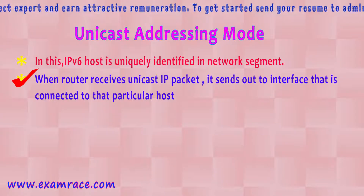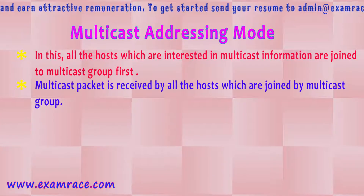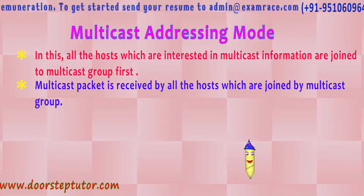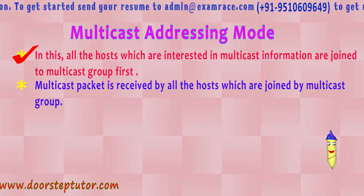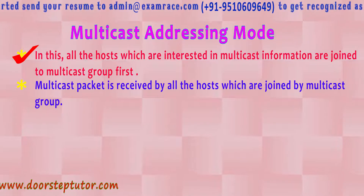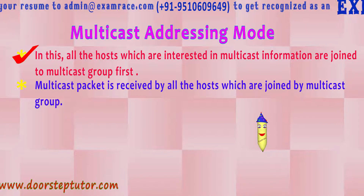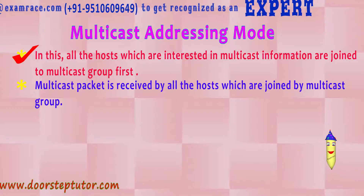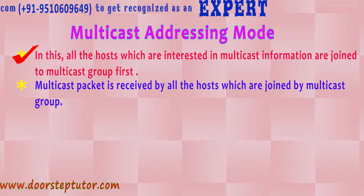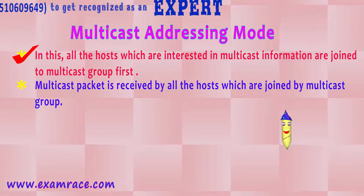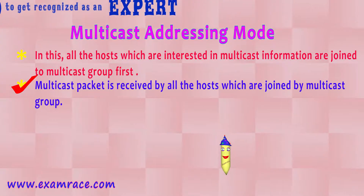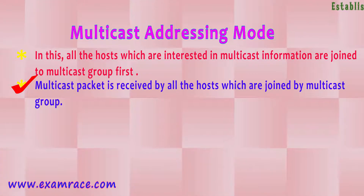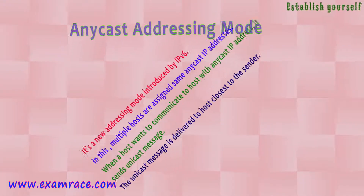Next we have multicast addressing mode. In this, all the hosts which are interested in multicast information join the multicast group first. The hosts interested in receiving multicast messages are connected in a group, and when the sender sends the message, every host connected to receive the packet will receive the multicast message. So multicast is received by all the hosts that have joined the multicast group.